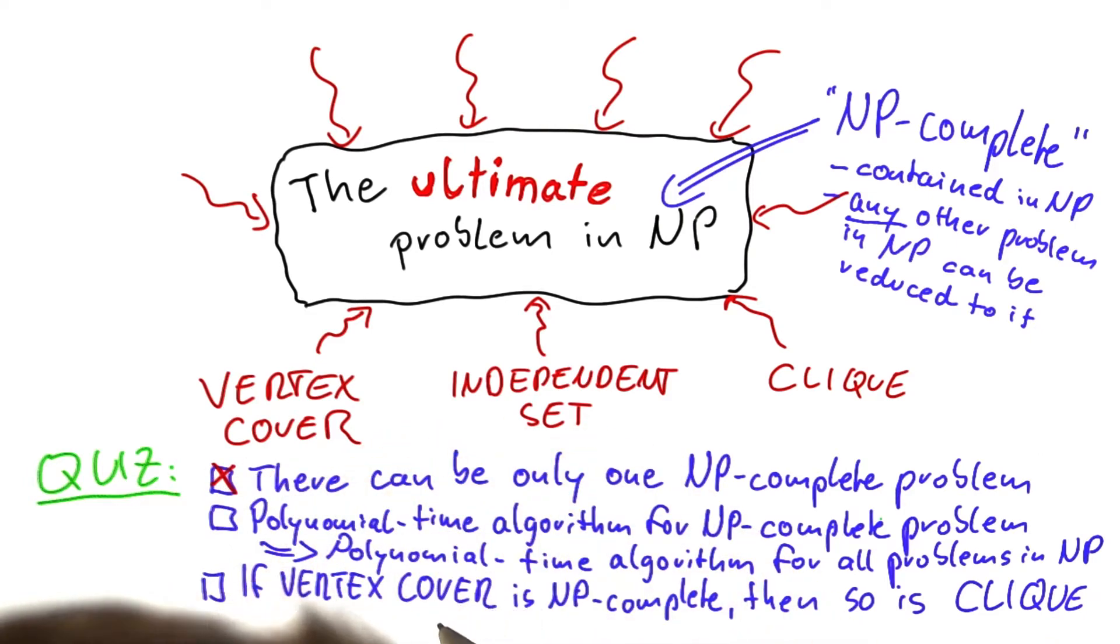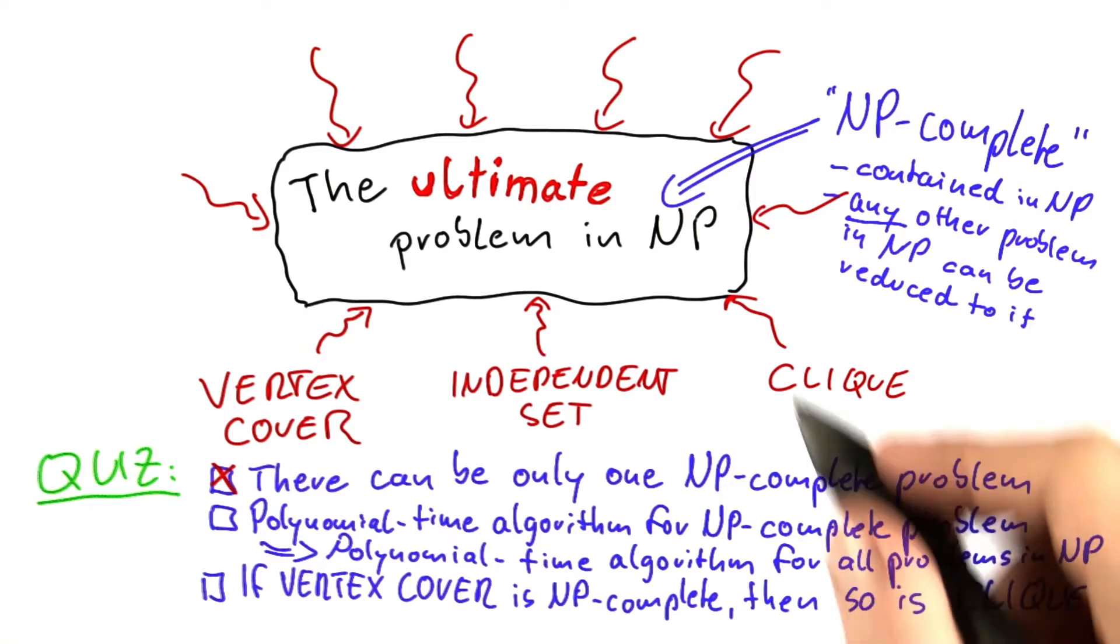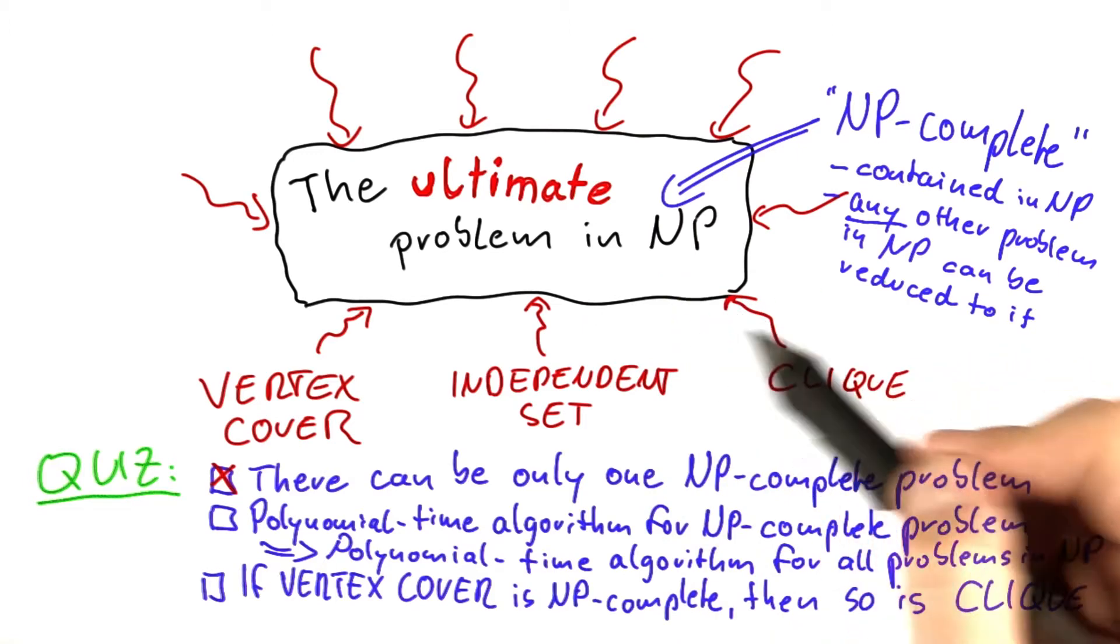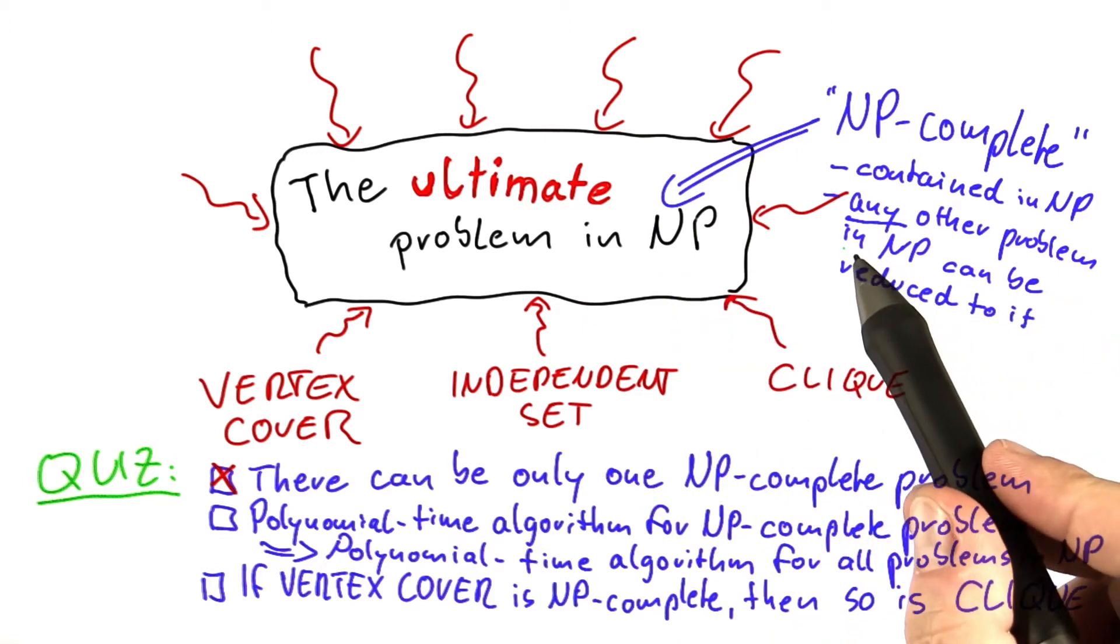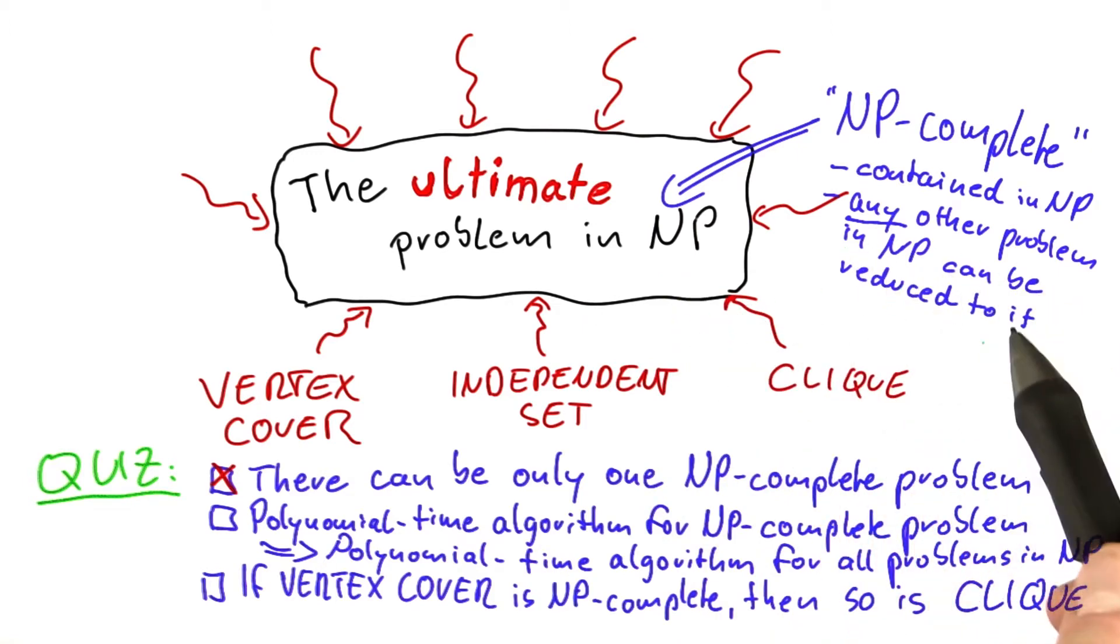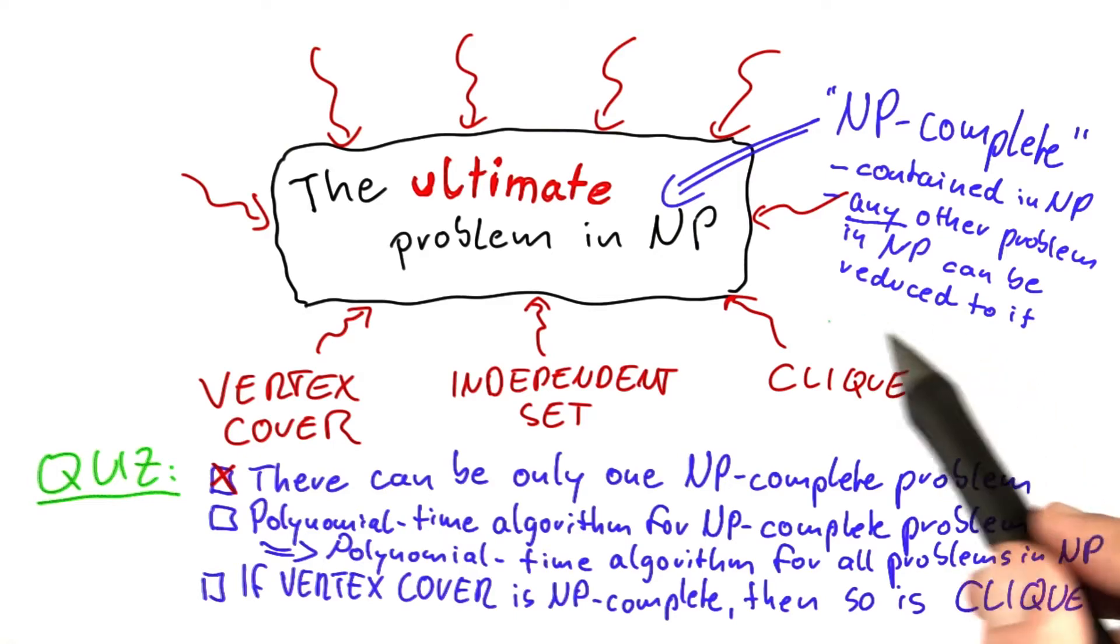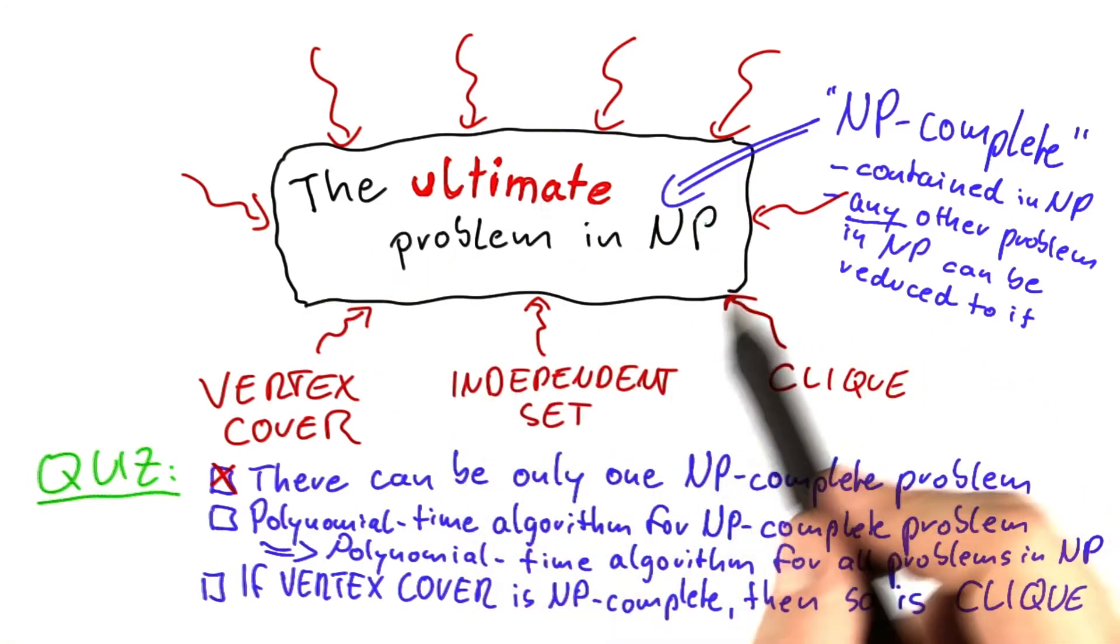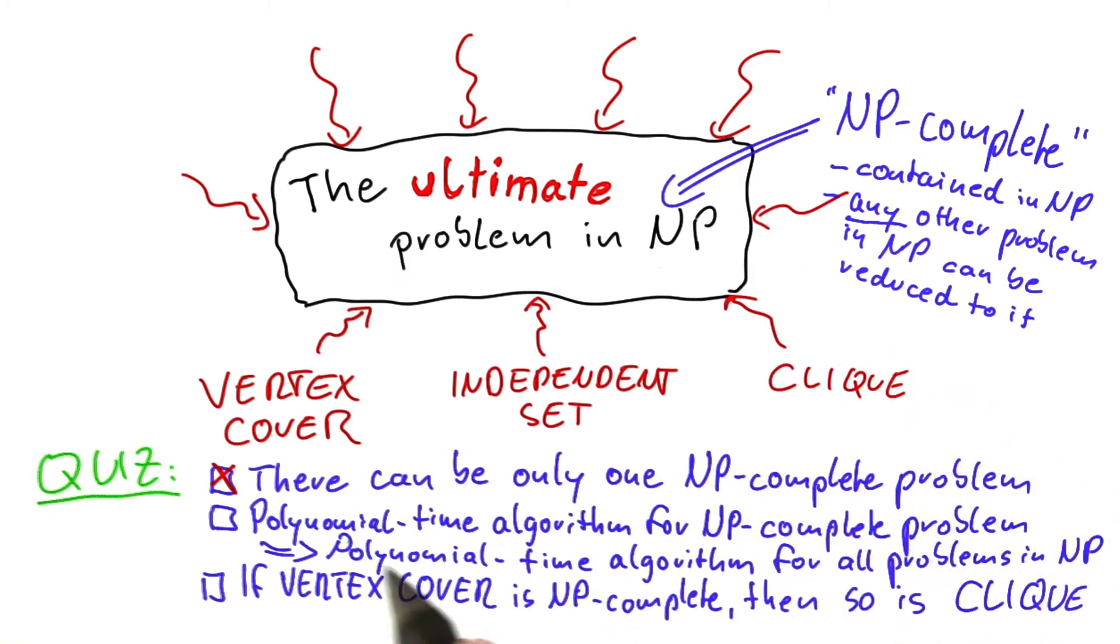If you found a polynomial time algorithm for an NP-complete problem, then what that would mean is that there would also be polynomial time algorithms for all other problems in NP. And the reason for that is that for an NP-complete problem, we have said that any other problem in NP can be reduced to it, and that can be done in polynomial time. So if you can solve this problem in polynomial time as well, then you automatically have a polynomial time algorithm for any problem that you can find in NP.